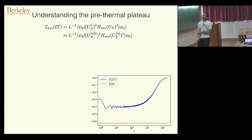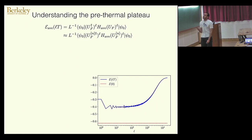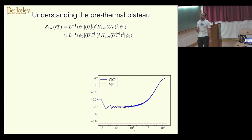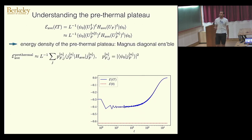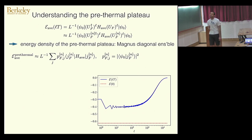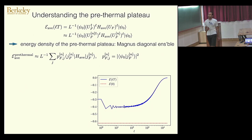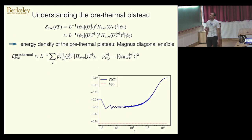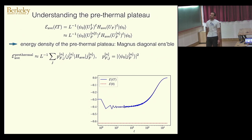How do we understand the pre-thermal plateau? The expression for the average energy is the time-averaged Hamiltonian measured in the exactly evolved state. Using the approximate Floquet unitary, I can approximate this quantity to a given order n. The energy density of the pre-thermal plateau is essentially given by the diagonal ensemble with respect to the Magnus Hamiltonian. One can compute the long-time limit using the eigenstates of the Floquet unitary and derive a diagonal ensemble to estimate the pre-thermal energy scale.